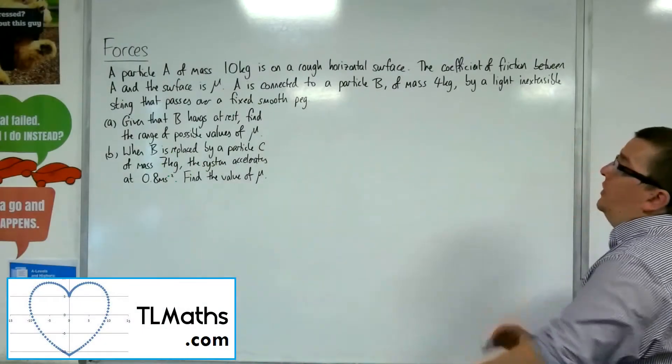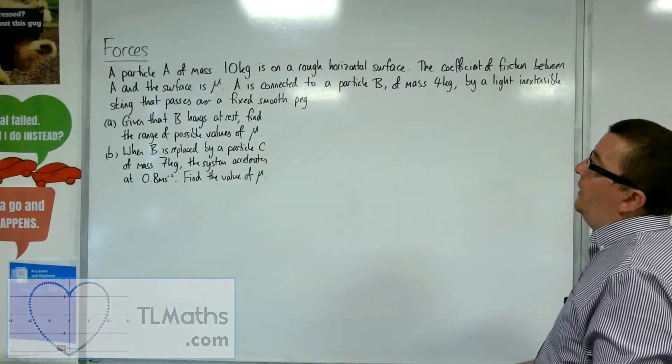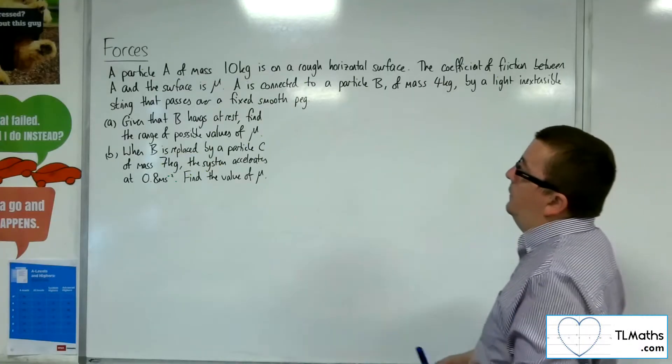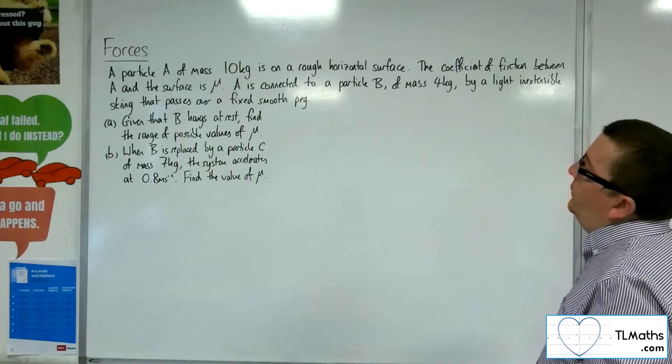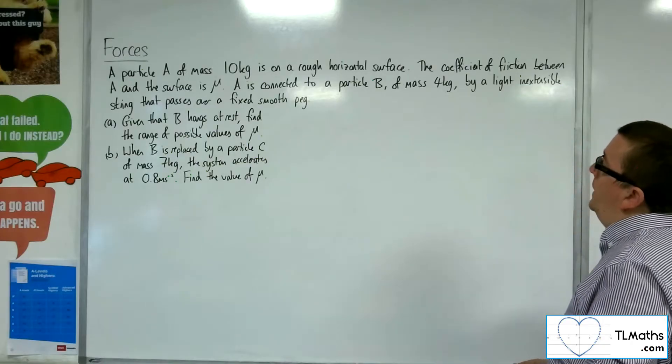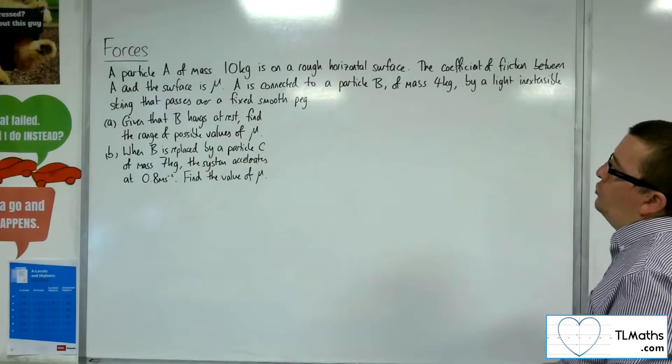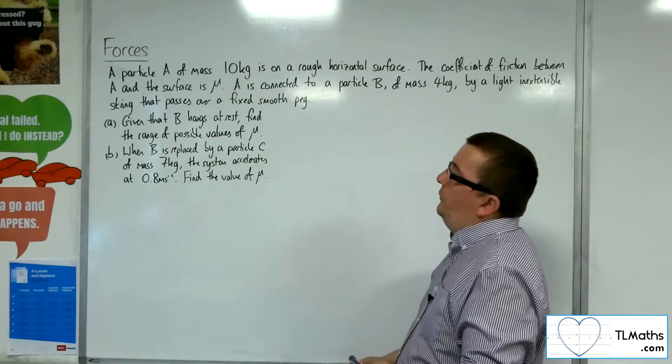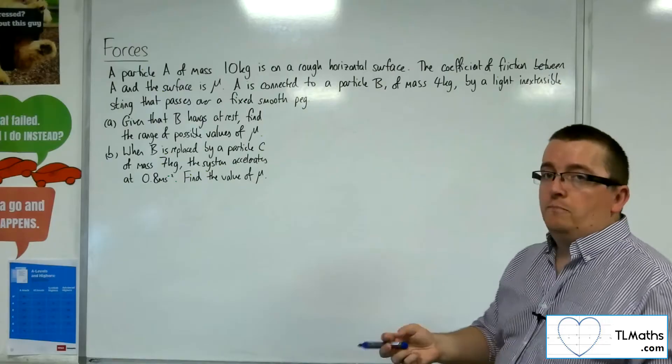In this problem, a particle A of mass 10 kilos is on a rough horizontal surface. The coefficient of friction between A and the surface is mu. A is connected to a particle B of mass 4 kilos by a light, inextensible string that passes over a fixed, smooth peg. Given that B hangs at rest, find the range of possible values of mu.